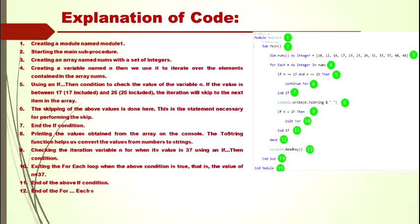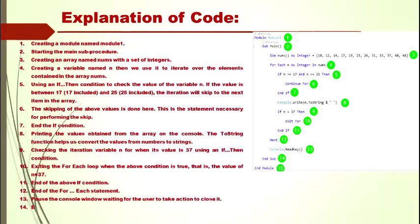Next, exiting the For Each loop when the above condition is true — that is, the value of n equals 37. Next, end of the above If condition. Next, end of the For Each statement. Then, pause the console window, waiting for the user to take action to close it. Next, end of the Main subprocedure. And last, end of the Module. So these are the explanations of each and every line of the example. I hope it is clearly understood.